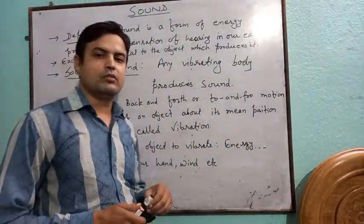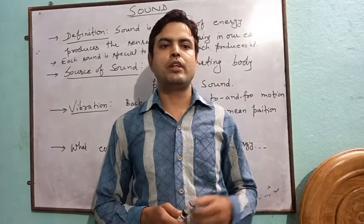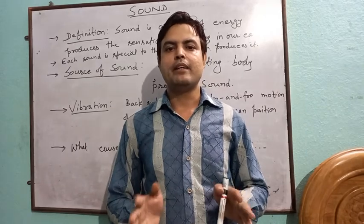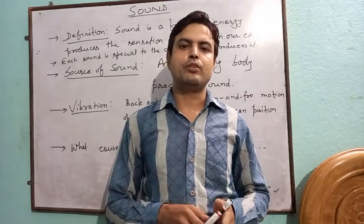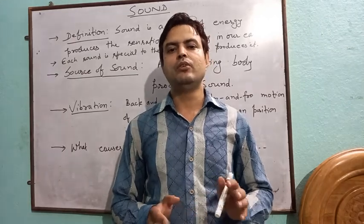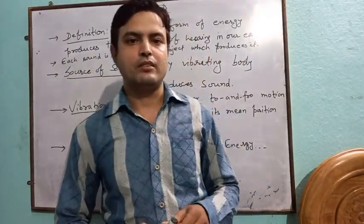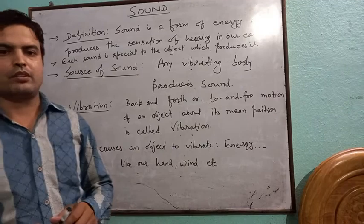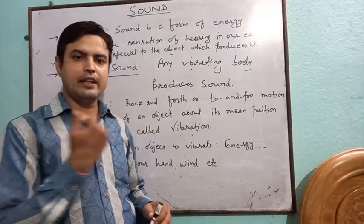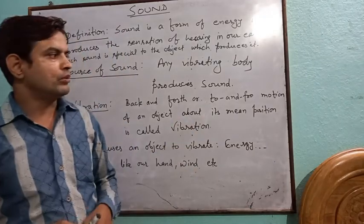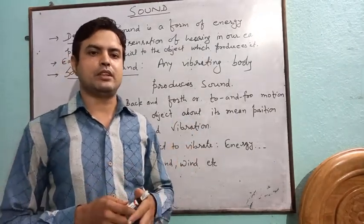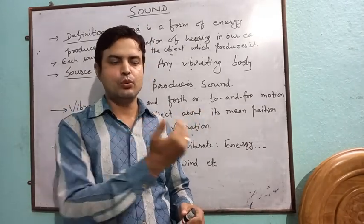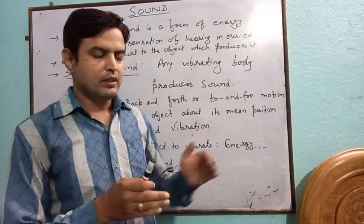The source of sound — what are the sources of sound, means where does sound come from? The answer is very simple: a vibrating body or vibrating object produces sound. Here a new term is introduced — vibration. Vibration is the back-and-forth or to-and-fro motion of an object about its mean position. This is called vibration.